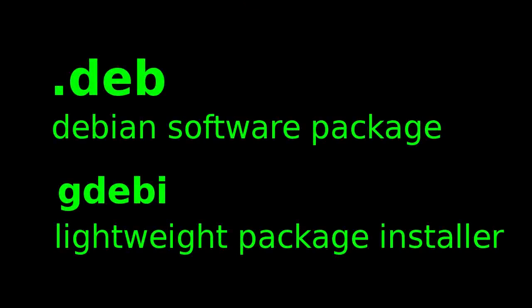Now I'm going to discuss downloading and installing Debian packages directly. Debian software packages all have the .deb extension. But you have to be careful because some of these are intended for Debian only, and some are intended for Ubuntu only. Sometimes they'll work on either, but the systems are slightly different, so they may not.